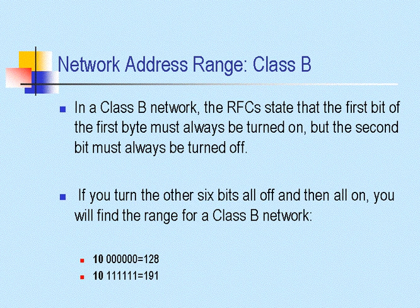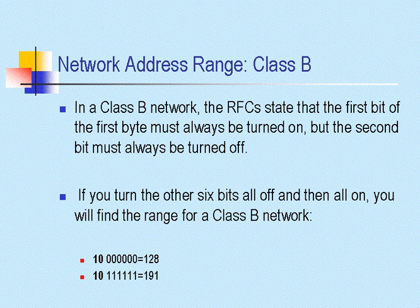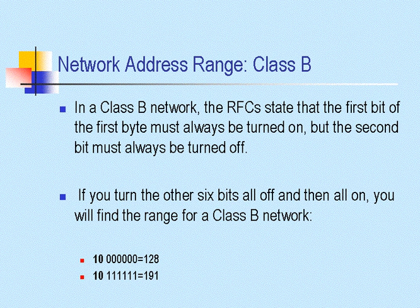Now the network class range for a Class B. In a Class B network, the RFC states that the first bit of the first byte must always be turned on, but the second bit must always be turned off. So if you were to turn the other six bits all off and then on, you will find the range for a Class B network. That would range from 128, which is that first bit — the second bit is always left off — and then adding 128 with the last six bits would give a total of 191. That's how we came up with that range.